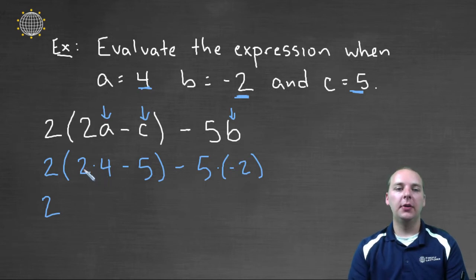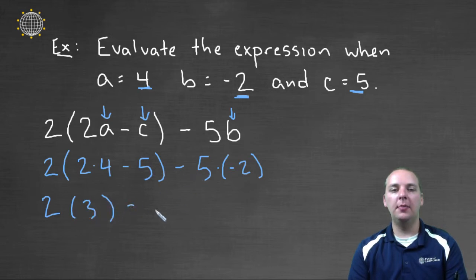2 times 4 is 8, 8 minus 5 makes 3, and then again minus 5 times negative 2.